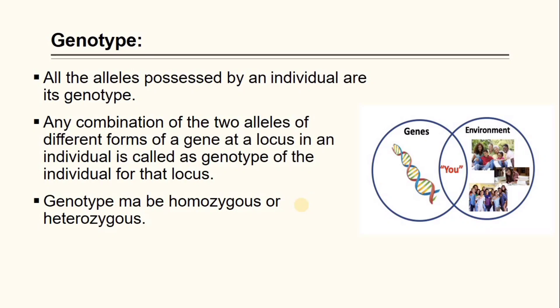Genotype: All the alleles possessed by an individual are its genotype. Any combination of the two alleles of different forms of a gene at a locus in an individual is called the genotype of the individual at that locus. Genotype may be homozygous or heterozygous.